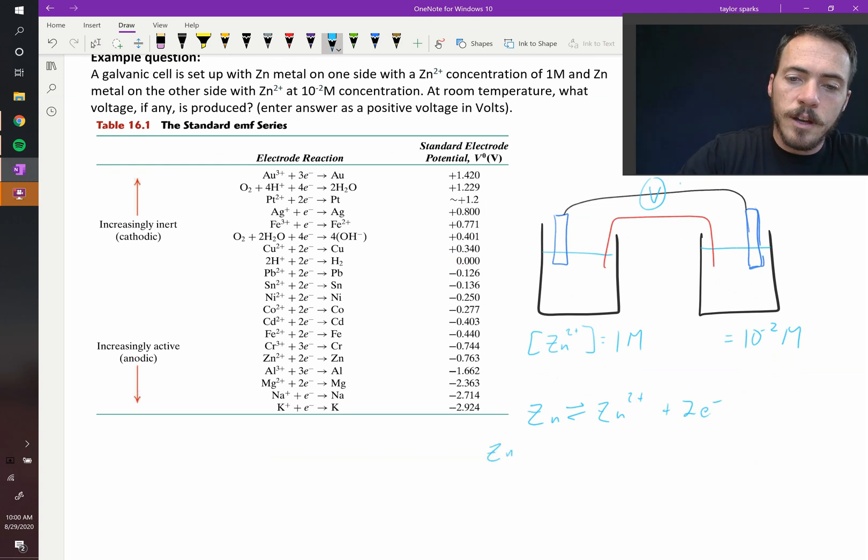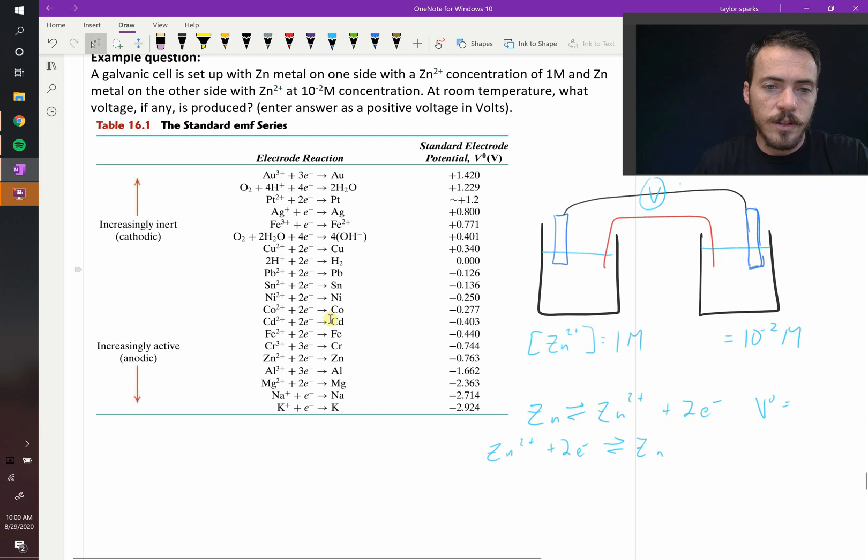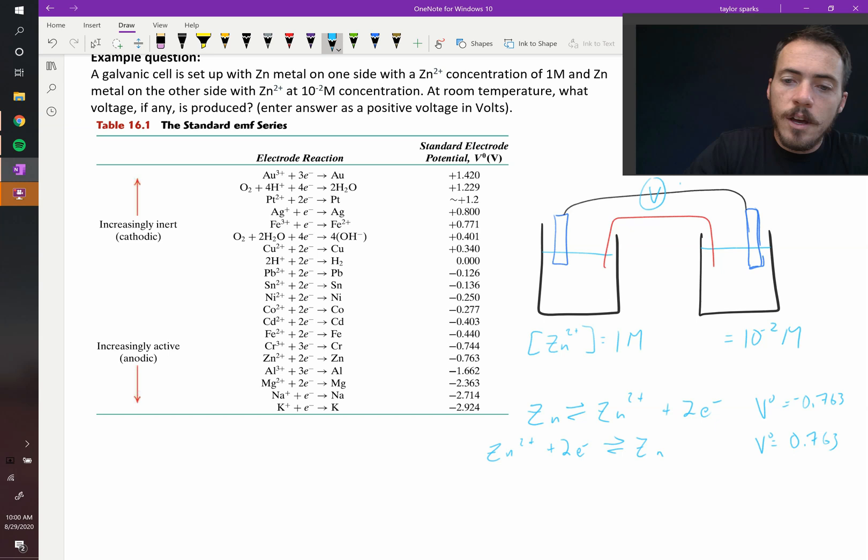Meanwhile, you've got zinc two plus ions picking up two electrons to form zinc metal. So that is the oxidation and reduction reaction for this. So you could write out the voltages for these. V naught for this one, the standard reduction potential is given in this table. It's negative 0.763, and this one, since we've just written the exact same reaction backwards, is going to be positive 0.763. So the overall cell potential, delta V naught, is equal to 0.